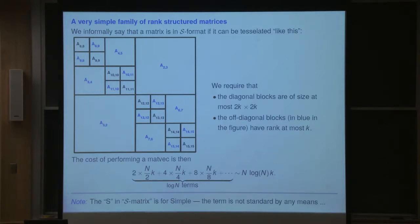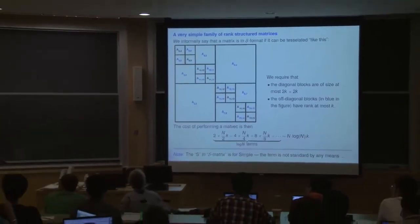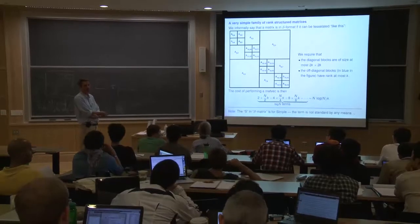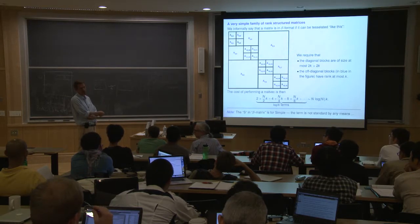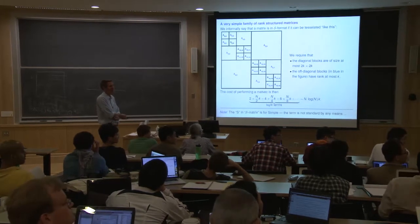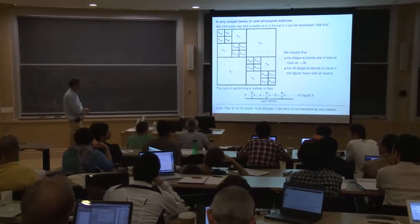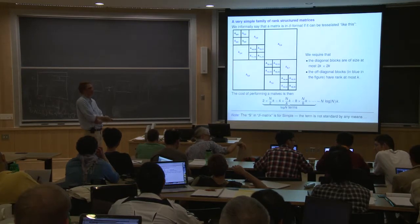I call this format the S-matrix — a completely made up term for these lectures; don't use it, it's not an established term. You could call it an H-matrix, or HSS, or HODL. The point is it corresponds to a specific hierarchical tessellation. For this to be meaningful, the rank at each level must be genuinely low, not just n-over-2.